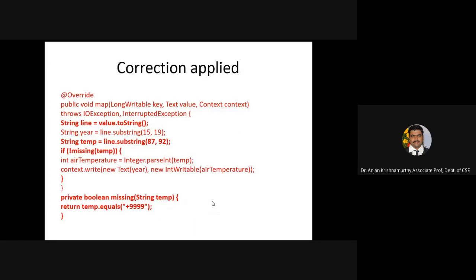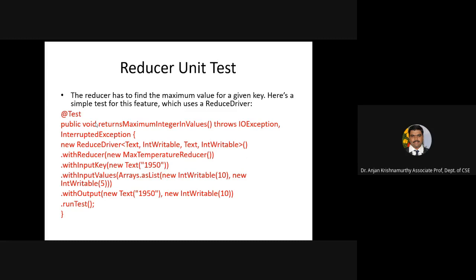This is a corrected version of that particular code, where you can see the highlights showing the corrections being made in the program. You can also write a unit test case for a reducer class. The reducer class test looks similar — at the end, wherever you see '.runTest()', this entire test case belongs only to the unit test case for that reducer class.